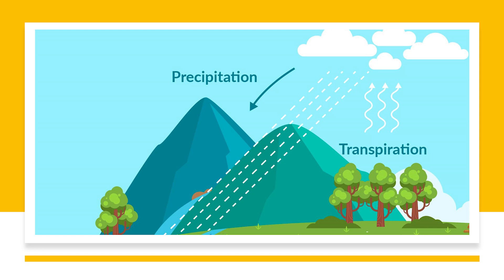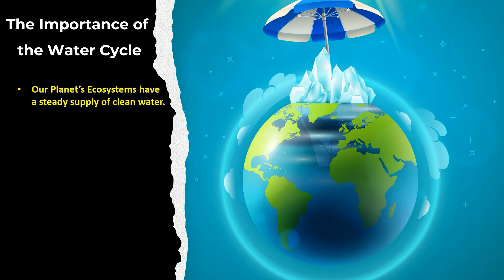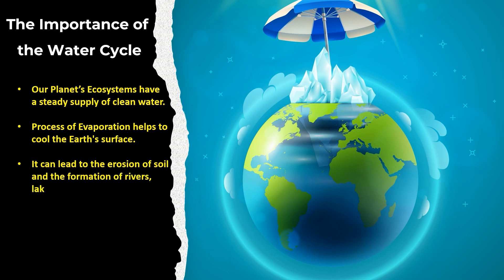Let's look at why the water cycle is so important to our planet. Water is essential for life, and the water cycle helps to ensure that our planet's ecosystems have a steady supply of clean water. It also plays a critical role in regulating earth's temperature, as the process of evaporation helps to cool the earth's surface. Additionally, the water cycle helps to shape our planet's geography, as it leads to the erosion of soil and the formation of rivers, lakes, and oceans.